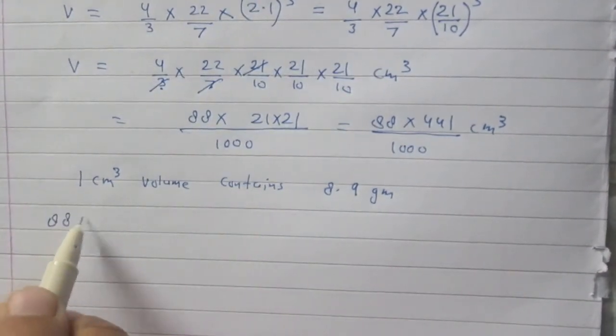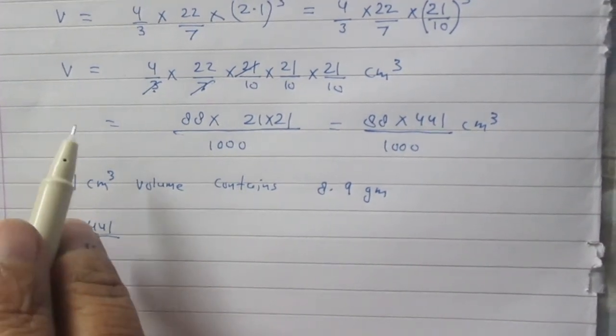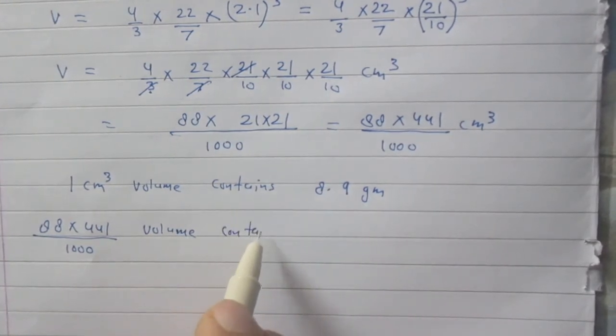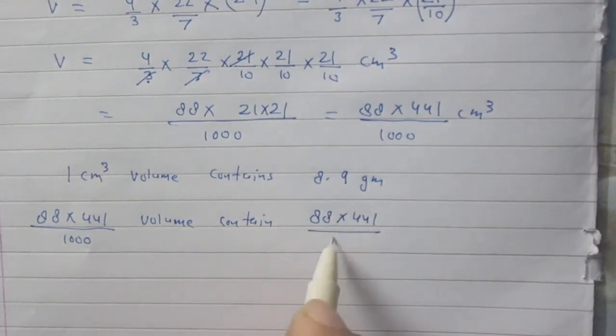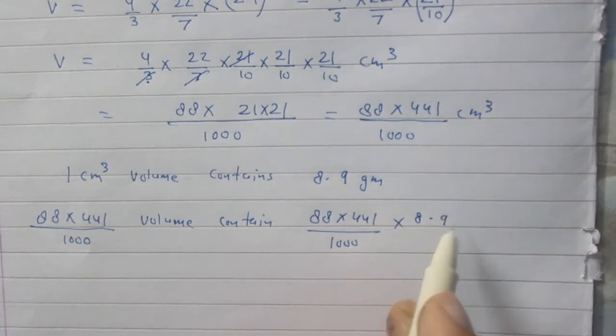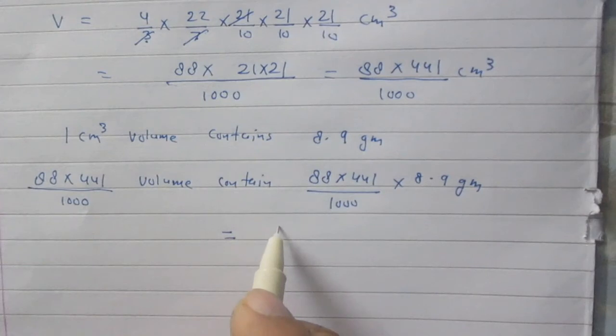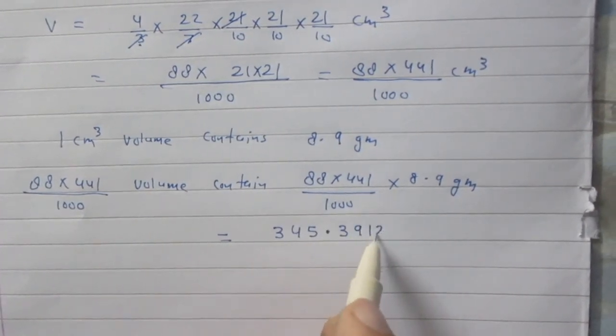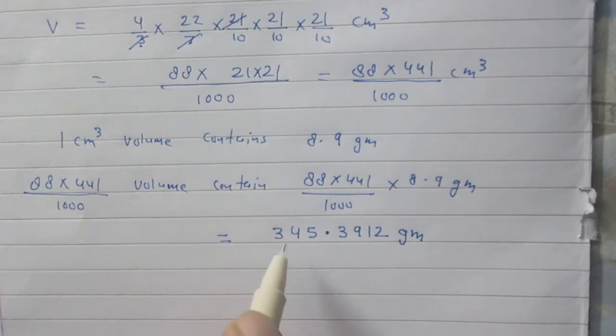So in this way we can find that 88 into 441 upon 1000 which is the volume of this metallic ball contains how many grams? 88 into 441 divided by 1000 into 8.9 gram. So after calculation you will find this figure as 345.3912. So we can say that mass of this metallic ball is 345.3912 grams.